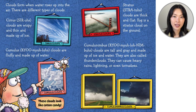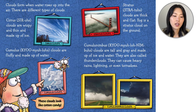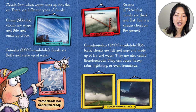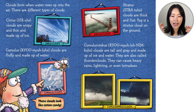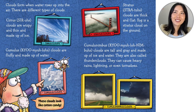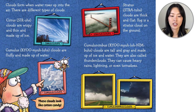Now, there are different kinds of clouds. Clouds form when water rises into the air. Cirrus clouds are wispy and thin and made up of ice. Cumulus clouds are fluffy and made up of water — these clouds look like cotton candy. Stratus clouds are thick and flat. Fog is a stratus cloud on the ground, so when you see fog you can think of a cloud that fell down. Cumulonimbus clouds are tall and gray and made up of ice and water. They are also called thunder clouds and can cause heavy rains, lightning, or even tornadoes.